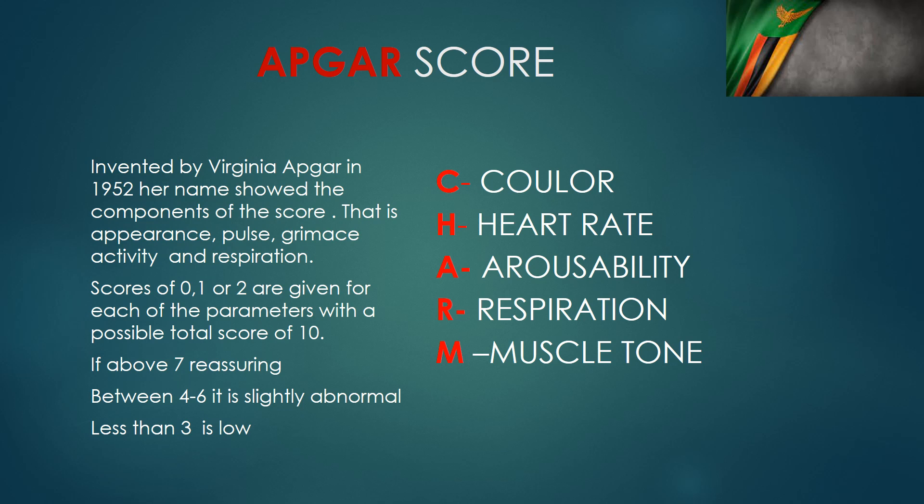Then we come to arousability, or reflex irritability, or what is called grimace in the APGAR acronym. This is really the response of the baby to stimulation. If you stimulate the baby and it's not responding at all, you give a zero. If you stimulate and get some slight response, you give a one. If you stimulate the baby and get maximum response, usually a baby crying, you give a two. You can rub gently at the back or gently rub the soles of the feet of the baby to try and arouse it — that is arousability.